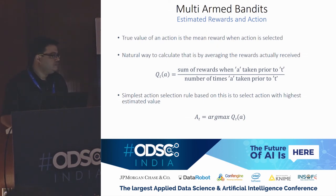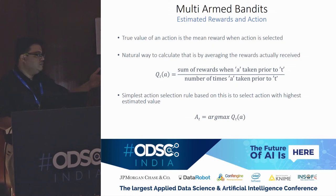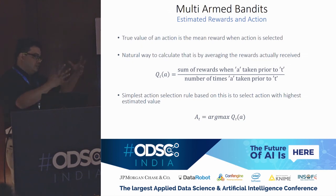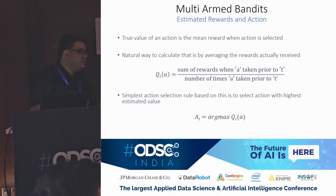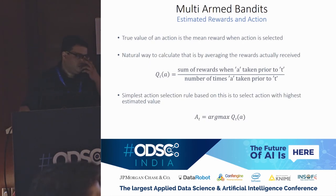Each arm is an action. The agent selects an arm and tries to maximize reward. The agent stores average reward per arm, keeps selecting greedily, but should also explore other arms. You have to balance between exploitation of current knowledge and exploration of untried actions.